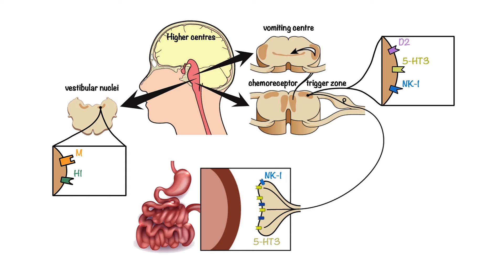The signals from each of these emetic areas can be generated in response to various stimuli. For example, the chemoreceptor trigger zone can be stimulated by circulating medications and toxins, which directly or indirectly stimulate dopamine D2 receptors. This is the reason why many chemotherapeutic drugs can cause nausea and vomiting.